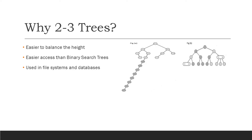Hence, it is easier to balance the height in 2-3 trees. And since a 2-3 tree can have two values in a single node and can have three children, both direct and indirect accessing is made easier. This nature of 2-3 trees, to store data in a more compact manner, makes it useful in file systems and databases where disk seeks are considered expensive and should be minimized as far as possible.